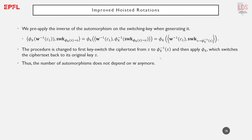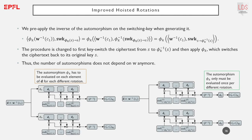However, hoisting increases the number of automorphisms as they must be evaluated on the decomposed polynomial instead of the original one. We improve the key switch keys for hoisted rotations by generating keys that switch the ciphertext key to the inverse of the automorphism. Doing so, we can move the evaluation of the automorphism to the end of the key switch, reducing the number of automorphisms to a strict minimum that does not depend on the number of elements in the integer basis decomposition.